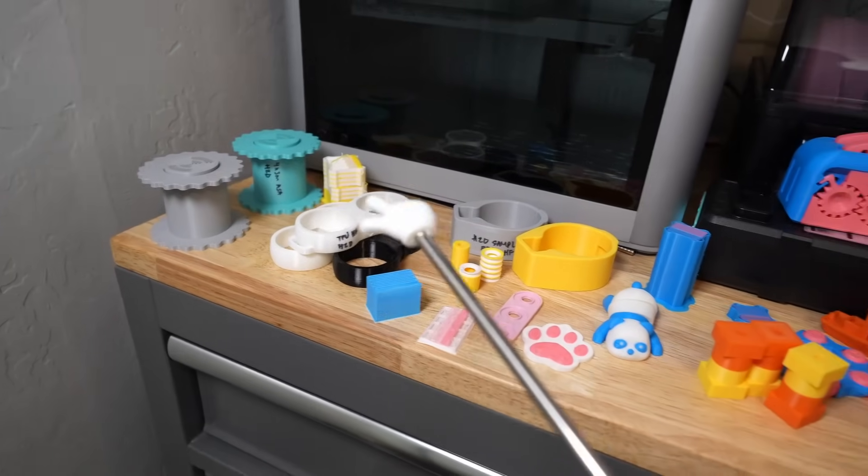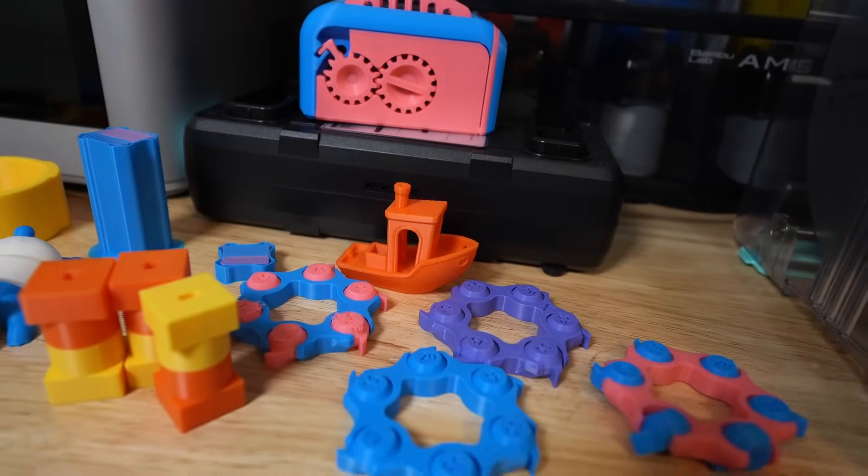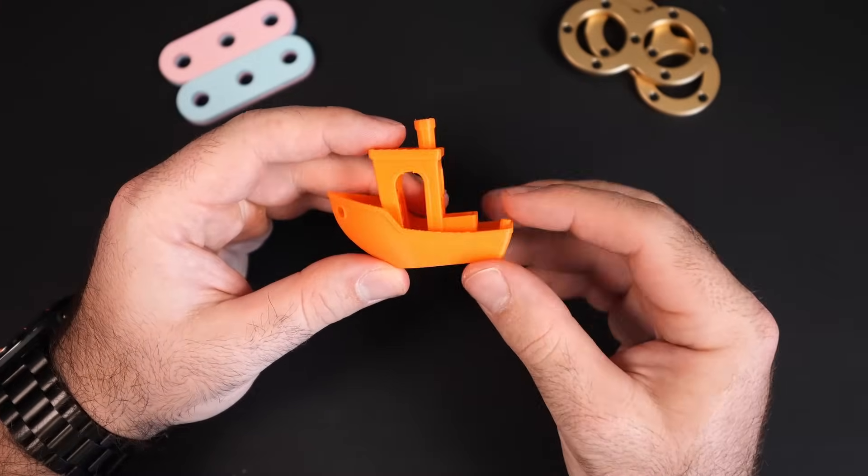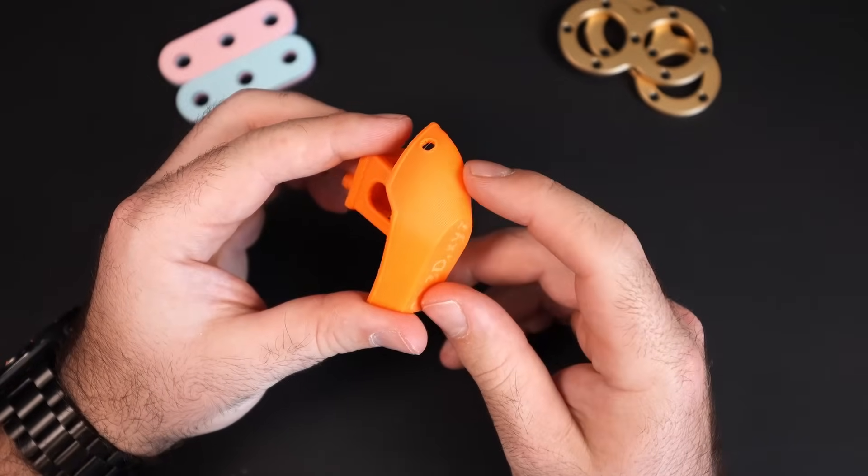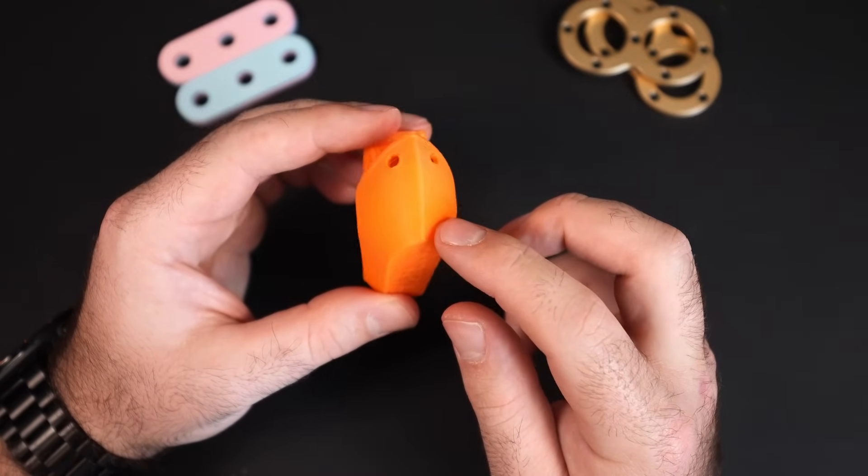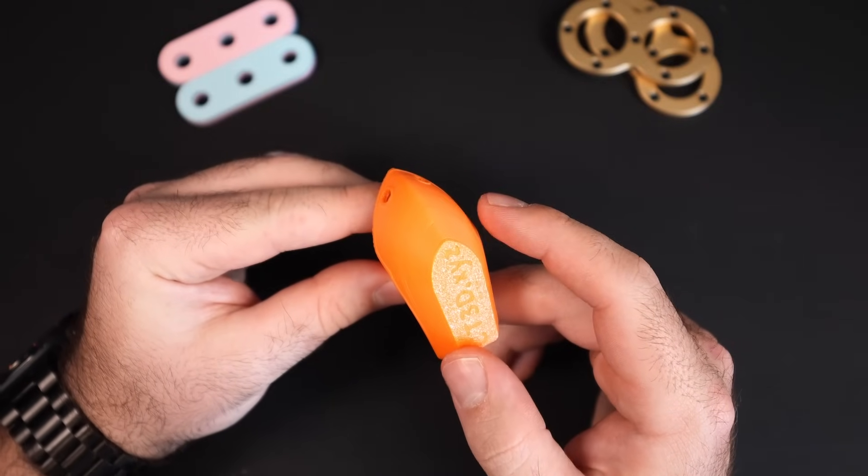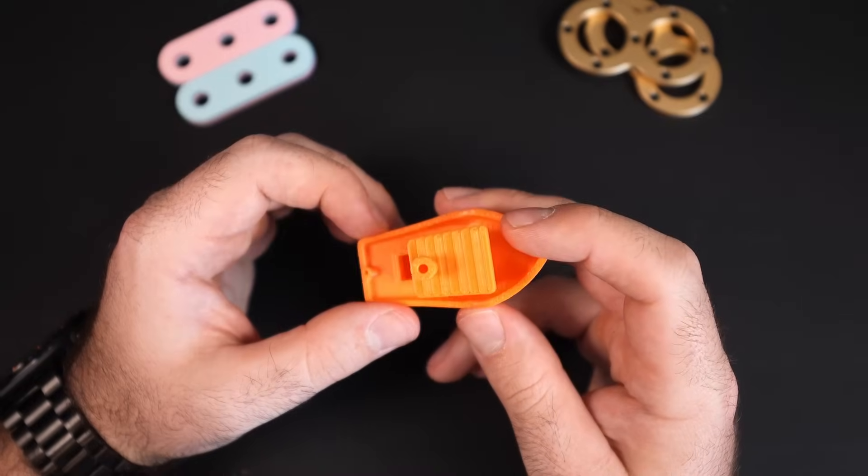First things first, I think we should start off with a classic, the Benchy. As you can see this Benchy is super clean. I mean this is exactly what you'd expect from a machine like the H2D. The hull of the Benchy has some small artifacting on it, but it might not be the cleanest Benchy I've ever seen, but it's pretty dang good.